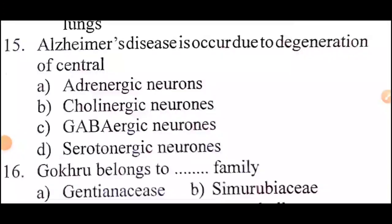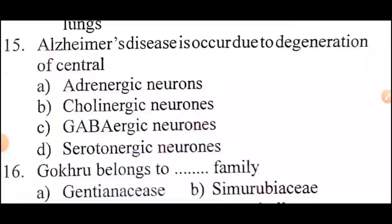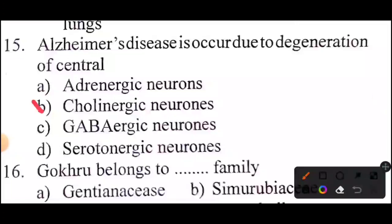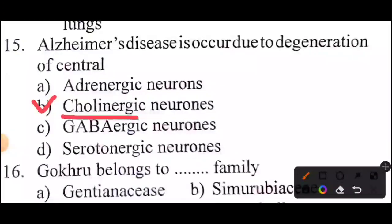Nineteenth question: Alzheimer's disease is acquired due to degeneration of central — Answer: Option B — cholinergic neurons.